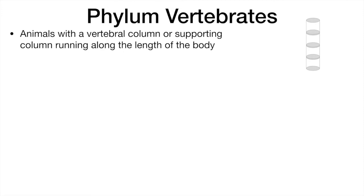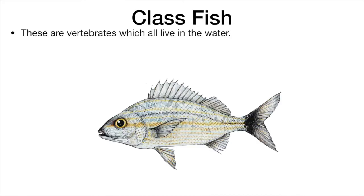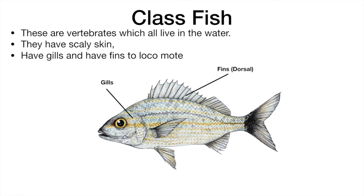Let's go ahead and divide vertebrates into five classes. Fish are vertebrates which all live in water. They have scaly skin and have gills and fins to locomote.